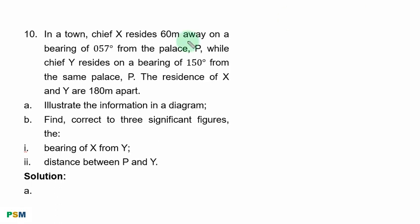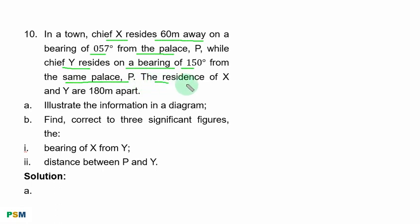Question 10. In a town, Chief S resides 60 meters away on a bearing of 057 degrees from the palace P. Chief Y resides on a bearing of 150 degrees from the same palace P. The residences of S and Y are 180 meters apart.